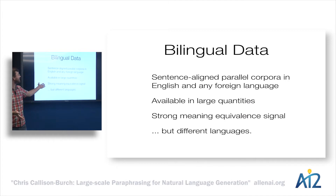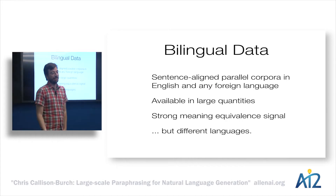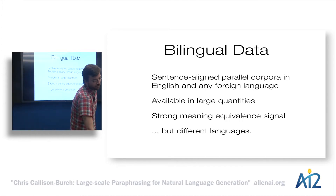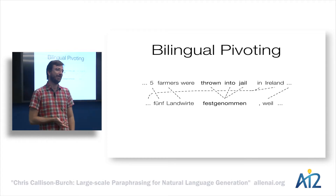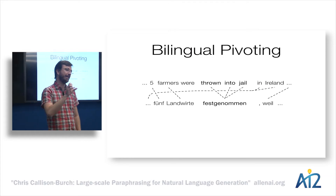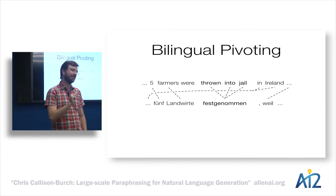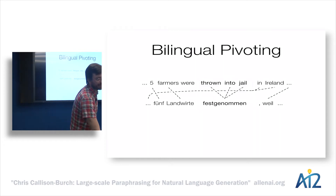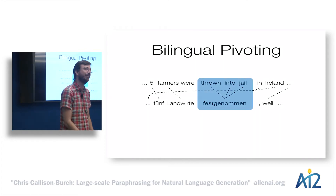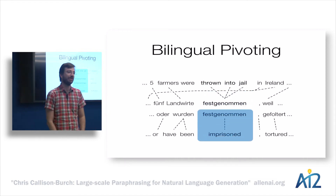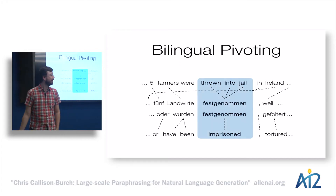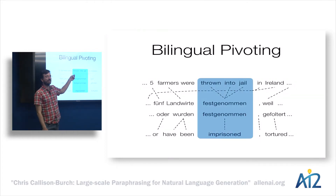The insight we had for pulling out paraphrases is: if we want to paraphrase a phrase like 'thrown into jail,' we look at the word-aligned sentence pairs and see what foreign language phrases it aligns to, then look for other instances of that foreign language phrase and what it aligns back to. Essentially we have a bilingual pivoting method where 'imprisoned' is a potential paraphrase of 'thrown into jail' because it shares a foreign language phrase.